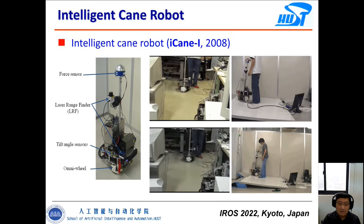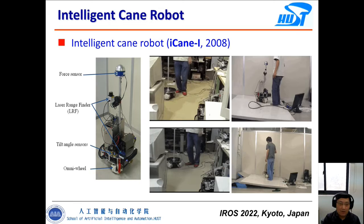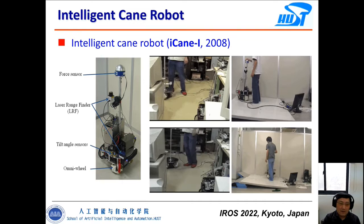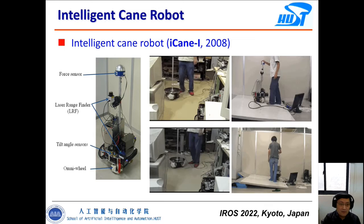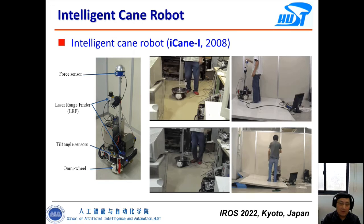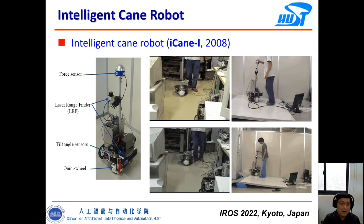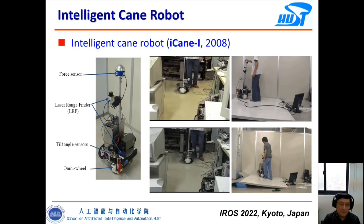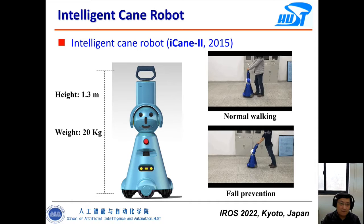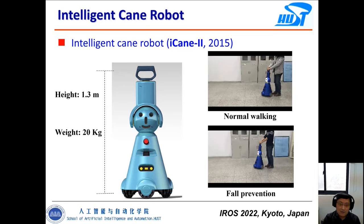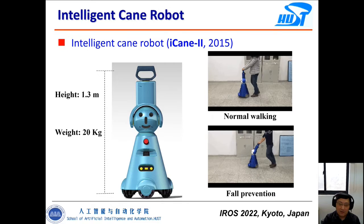This is the first type of our walking aid robot. This project was started in 2008 when I was a postdoctoral researcher at Nagoya University in Japan. The iCane has an omnidirectional mobile base with force sensors to measure human-robot interactive force, and laser range finders to measure the distance between the human and the robot. We also added a special joint to prevent the human from falling down.